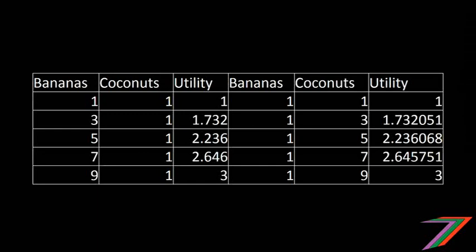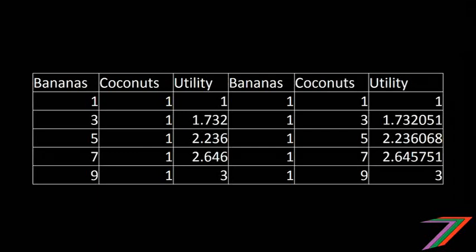Let's look at another table explaining diminishing utility. One coconut and one banana gives one util; two coconuts and two bananas gives two utils — no diminishing utility there. But if you only increase one fruit: one banana and one coconut gives one util; add another two coconuts and no bananas, utility rises to 1.7; add another two coconuts, it rises to 2.236; add another two coconuts, utility rises to 2.64. Utility is diminishing because the ideal mix is approximately equal. As you get further from that — keeping adding more coconuts — the utility gained per extra coconut falls. Ideally you want to keep bananas and coconuts roughly the same.